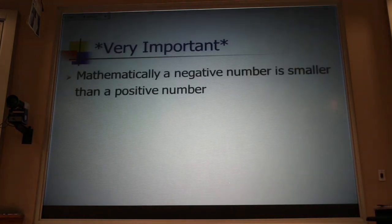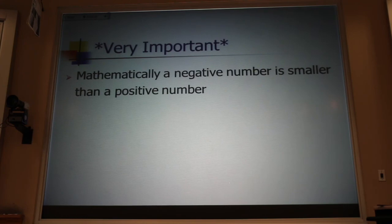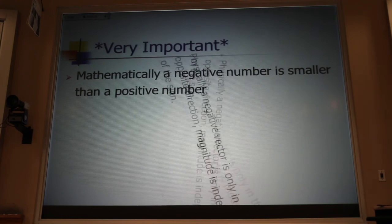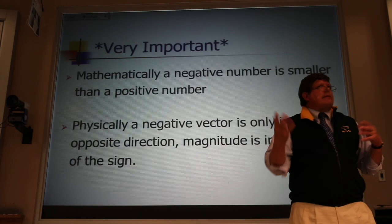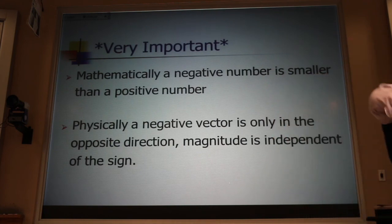Very important idea. Mathematically, a negative number is smaller than a positive number. But when we're dealing with vectors, the magnitude is always a positive quantity. So we don't say that a negative vector is smaller than a positive vector. That minus sign is just telling us what direction it's pointing. What we say is that a longer vector has a bigger magnitude than a shorter vector, regardless of where they're pointing.